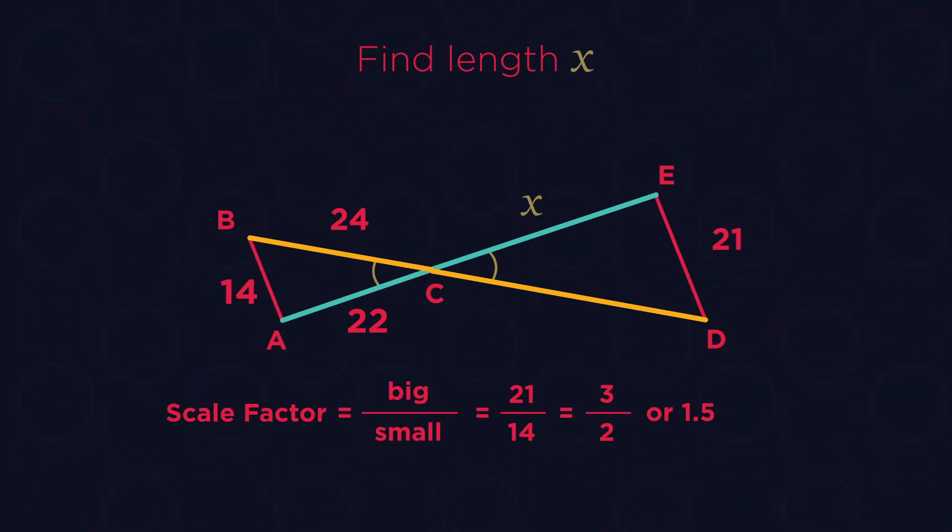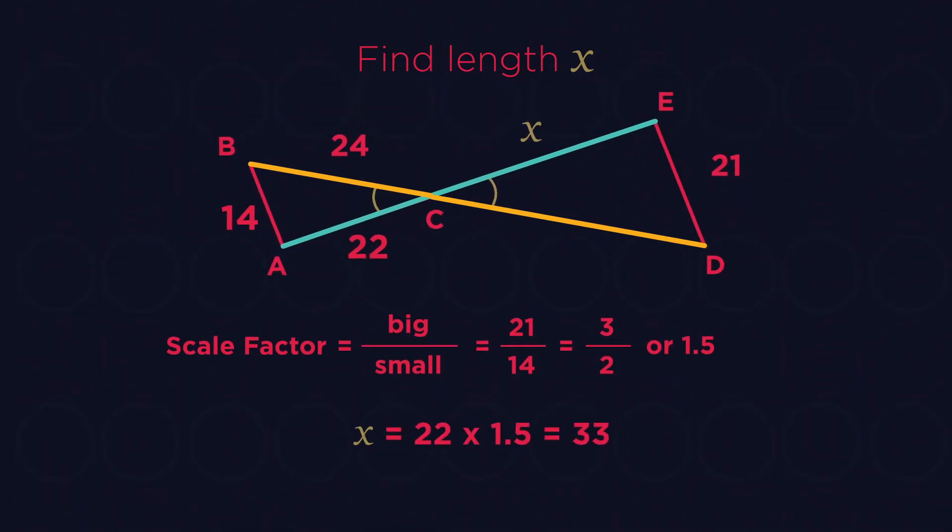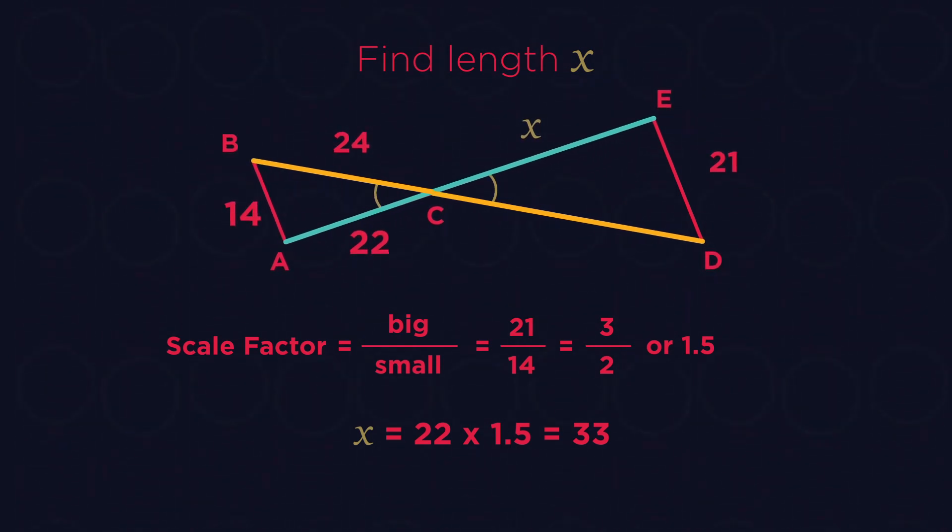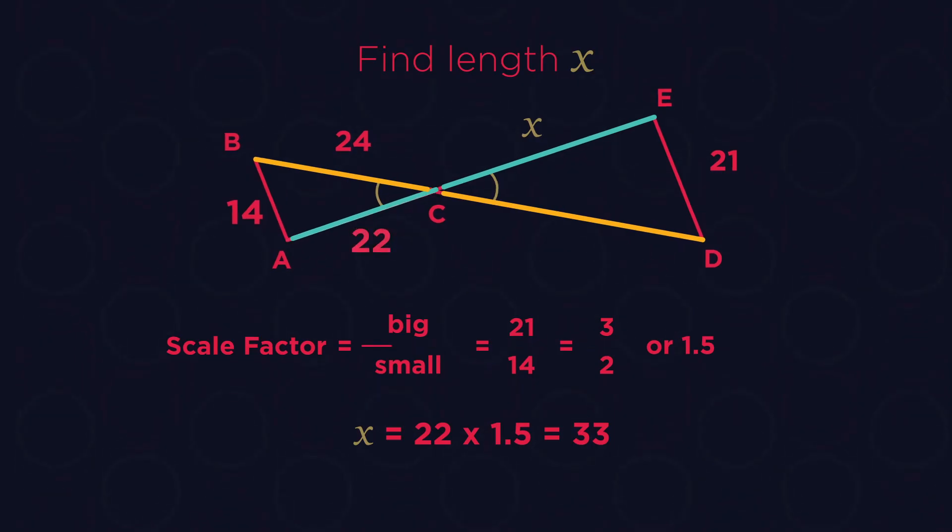So as always, start with the scale factor. Triangle CDE is the bigger triangle. So to find length X, multiply 22 by 1.5.